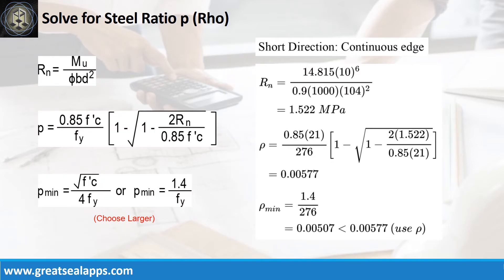Given short direction, continuous edge moment equals 14.815 kN·m/m. Resistance factor equals 0.9. B equals 1,000 mm and D equals 104 mm. The beam design ratio Rn equals 1.522 MPa, and reinforcement ratio ρ equals 0.00577.